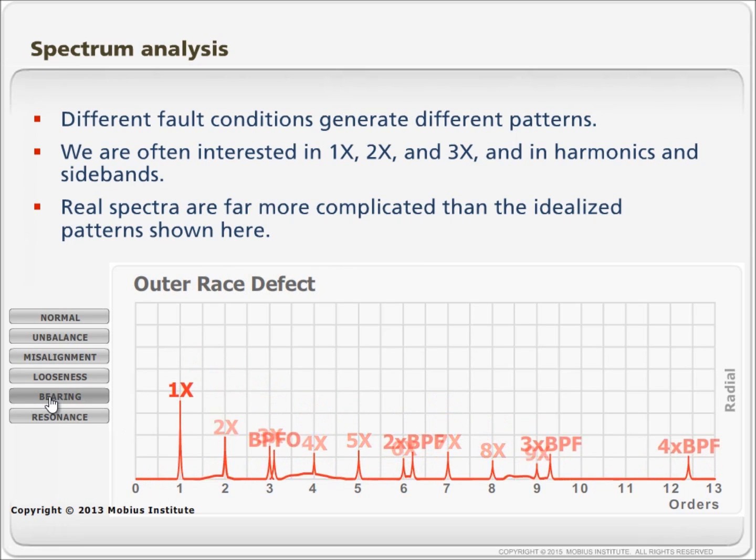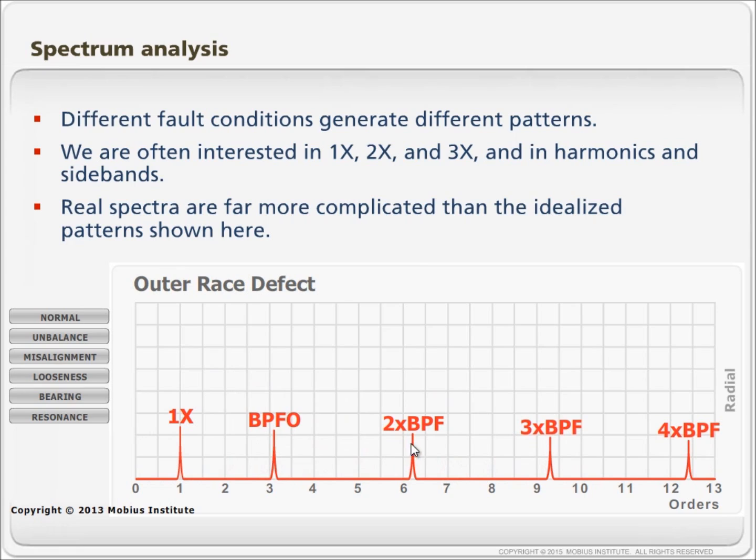In the case of bearing faults, we see a lot of these peaks again, harmonics, but this time of the bearing frequency. We might see little peaks on either side as well, called side bands. In resonance, we might see a high 1x peak but a broader base. There are lots of things we can look at in terms of the individual fault conditions. How the spectrum changes tells us about the nature of the problem, and the amplitudes tell us the severity.